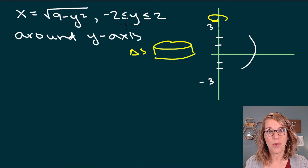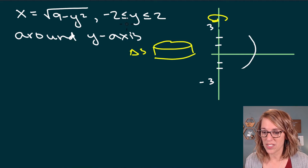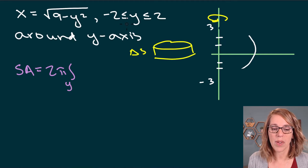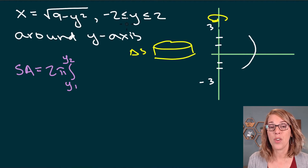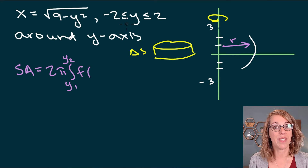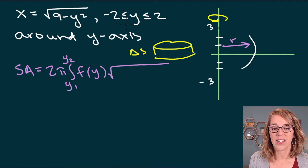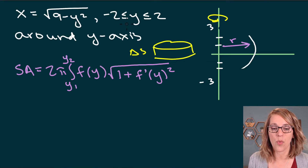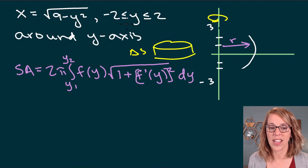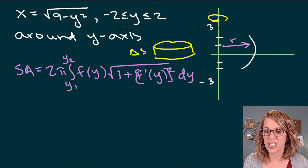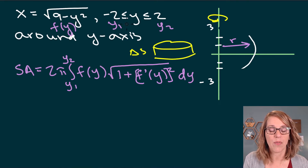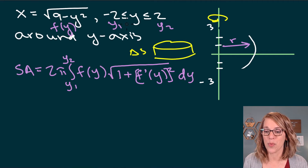I need to rewrite the formula in terms of y. The surface area formula becomes: 2π times the integral from y1 to y2 of f of y — which represents the radius r — times the square root of 1 plus f prime of y squared, all dy. We have y1 and y2, and the function in terms of y. The only missing piece is the derivative.